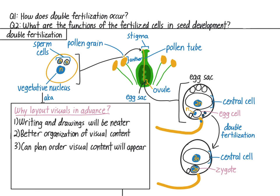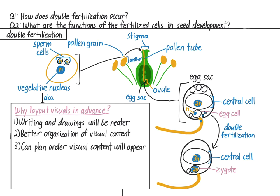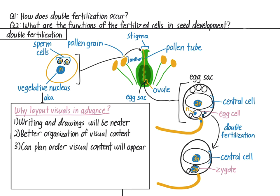You can also use headings and subheadings, use lists, have a flowchart, or whatever makes sense for the material that you're teaching. But your visuals should have some kind of structure and flow to them. Fourth, laying out your visuals in advance lets you resize your images, diagrams, etc., and move your content around so it's not such a jumbled mess on the page.